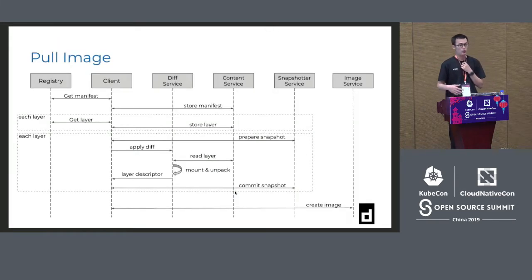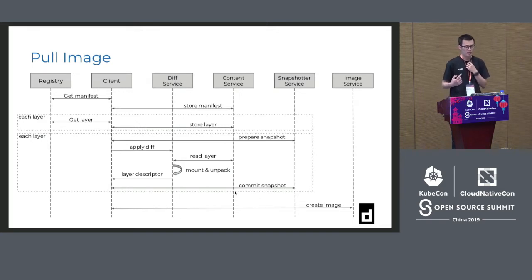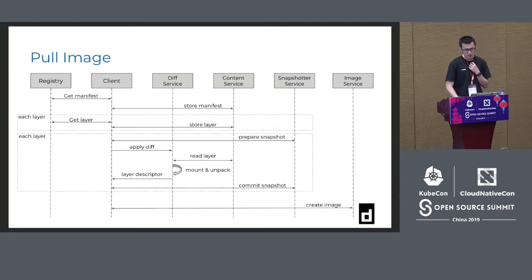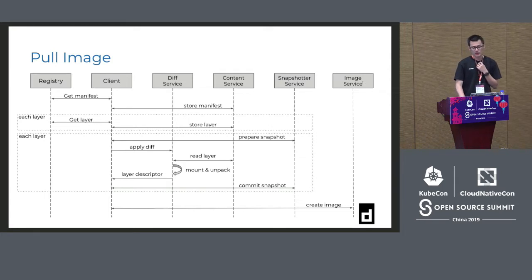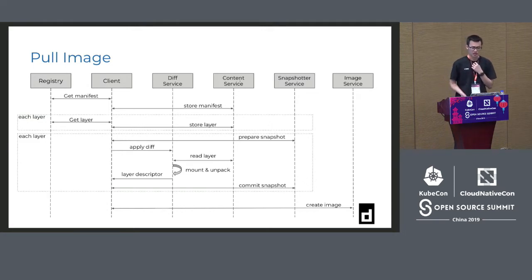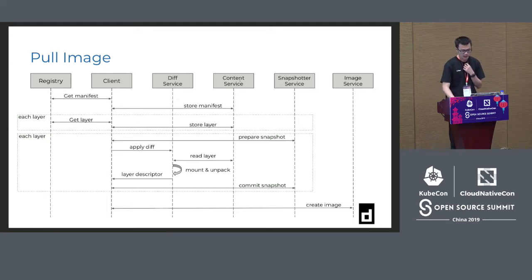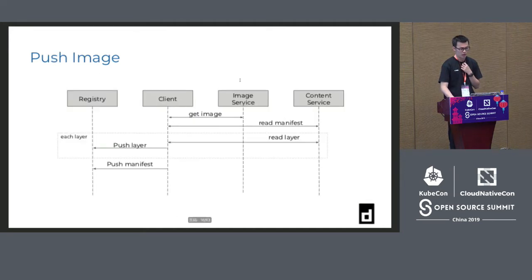Let's look at a small example. When we want to do a pull image, it's not a call of one API but four APIs — for example, the diff service, content service, snapshotter, and the image service. This image may be different from the image we usually talk about — it's used to manage data and connect snapshotter and preliminary data. So on the client side a lot of things are done, and the portals are quite small. These services can be reused and grouped together.